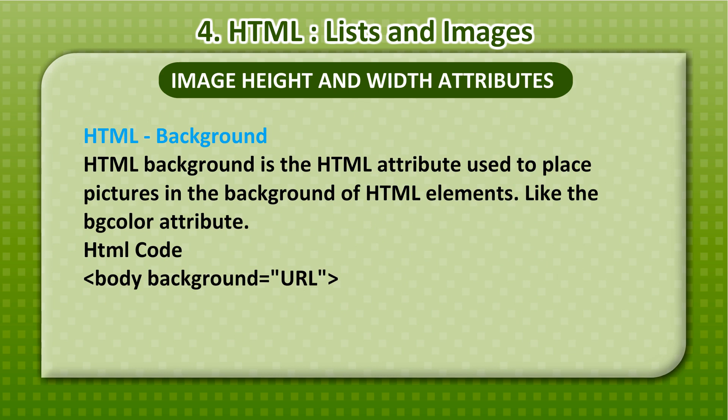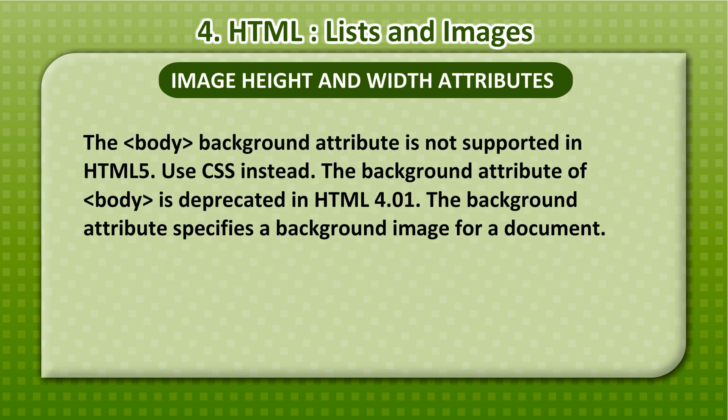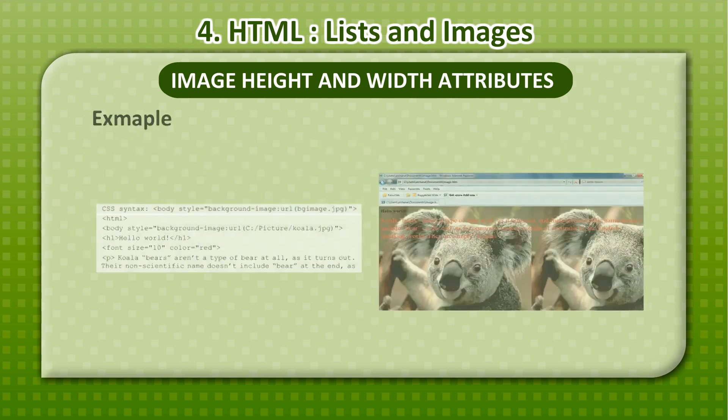HTML background is the HTML attribute used to place pictures in the background of HTML elements, like the bgcolor attribute. The code is: <body background="URL">. Note that the body background attribute is not supported in HTML5 — use CSS instead. The background attribute was deprecated in HTML 4.01. The background attribute specifies a background image for a document.